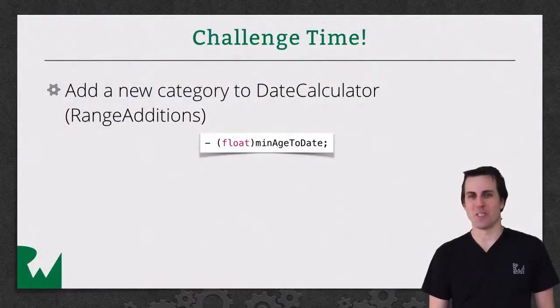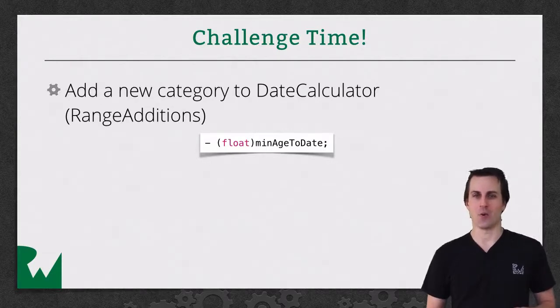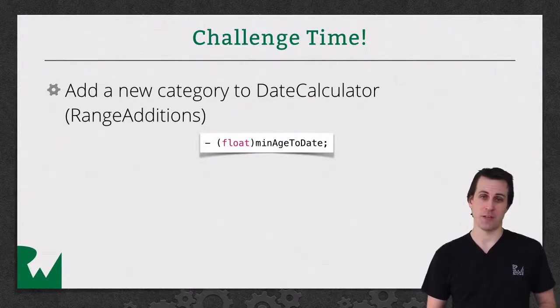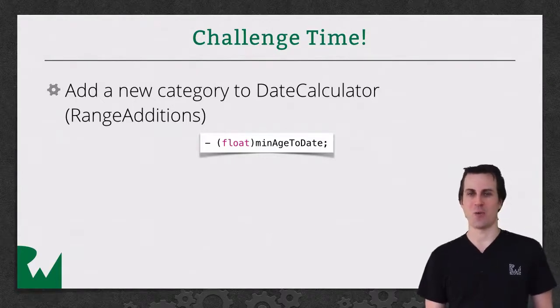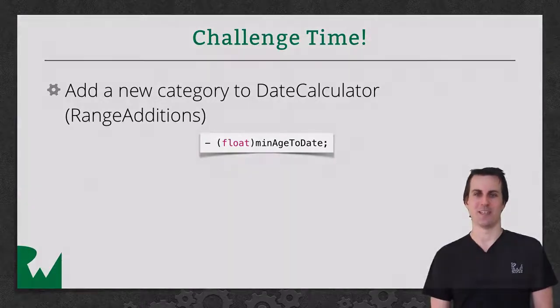All right, that's it for this video tutorial. But as always, I want to leave you off with a challenge to play around with this on your own. So I want you to create a new category on date calculator called Range Additions. And it should just have a single additional method called minimum age to date, and it should return the, obviously, minimum age to date. And then just try this out in your application delegate.m to make sure it works. So it should be pretty simple. Good practice with categories. And I hope you enjoyed this video tutorial. Thanks for watching, and we'll see you next time.